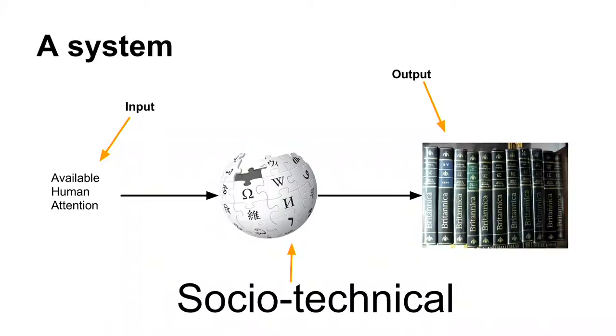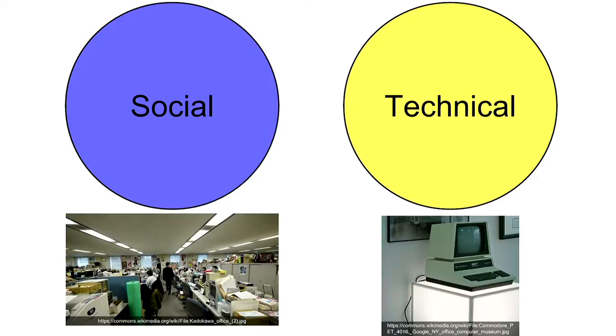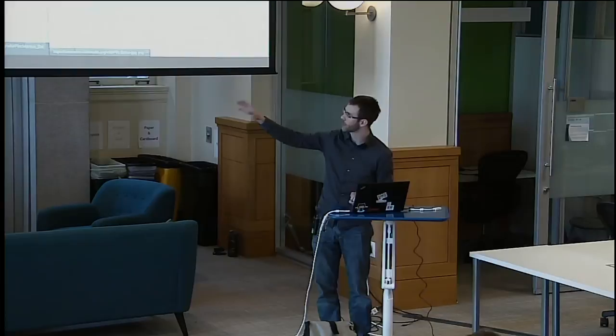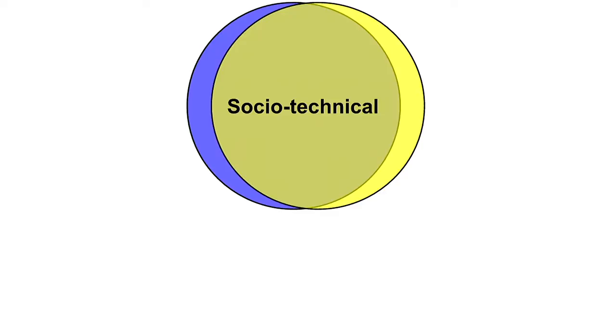I've said socio-technical a lot, so I should define it. To do so, I want to talk about the history of this term, which is common in my field. A long time ago, when computers mostly existed in offices, we saw the social as something that happened next to the technical. But after a while, we realized we could solve social coordination problems with technical things — calendar apps, email apps — bringing the social and technical closer together.